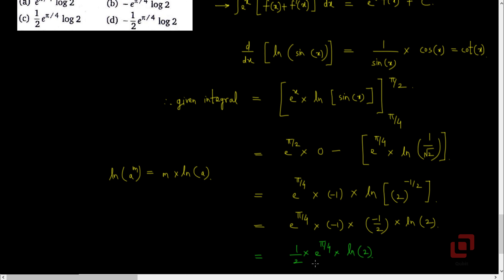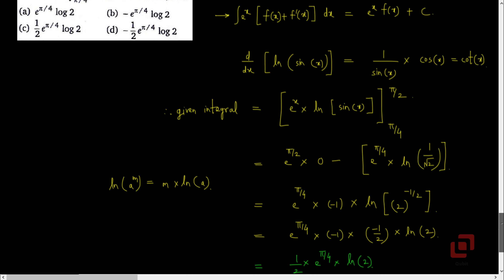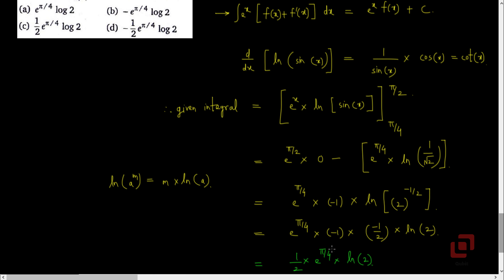Let us compare our answer with the options. We have got 1/2 into e^(pi/4) into log of 2, which is present in option C. Hence the correct option is C.